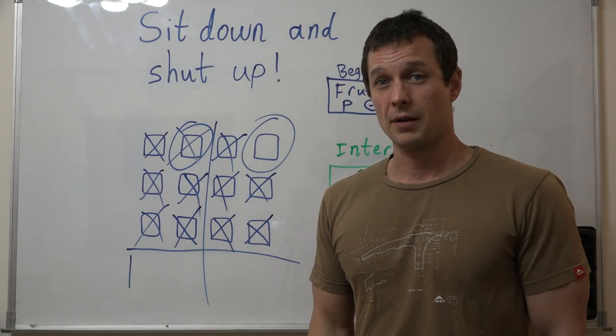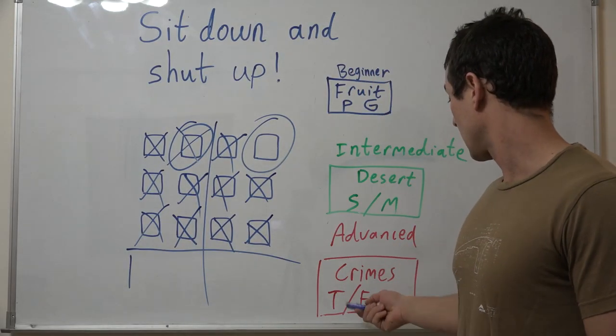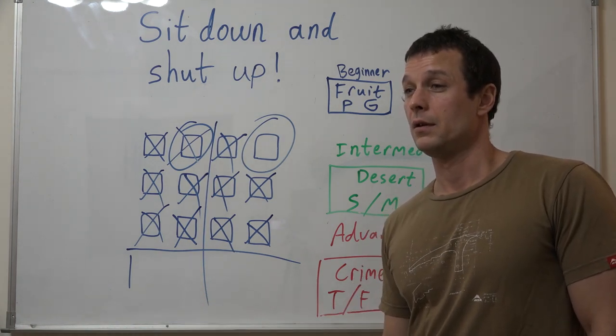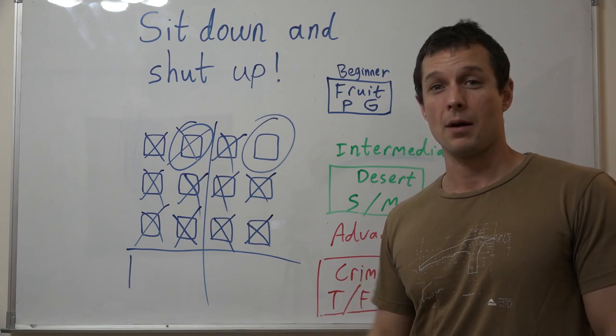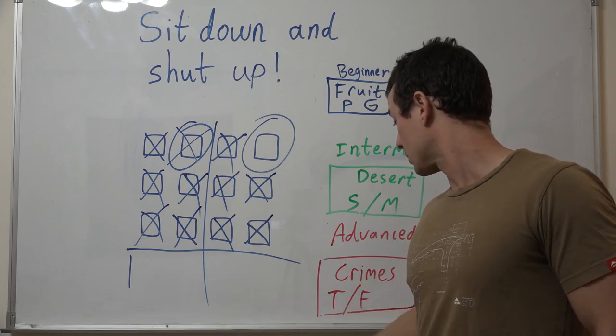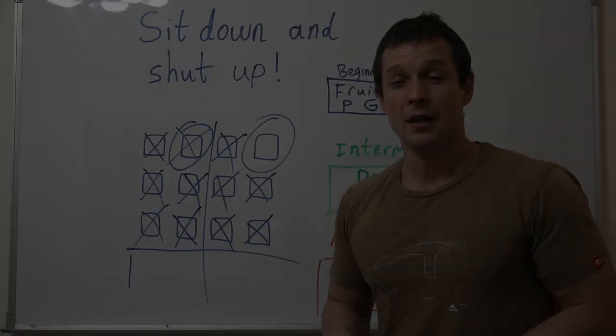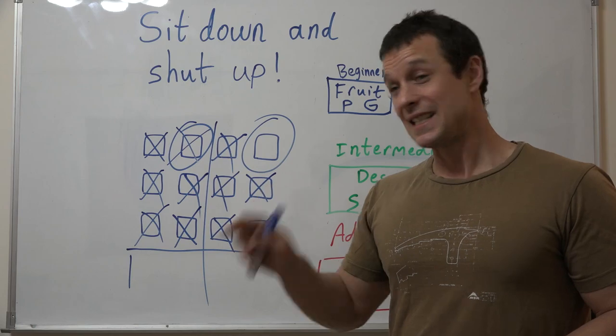So for adults or advanced classes you can still do the same thing. Advanced class - I got a crime, give me an example of a crime. Robbery, sure, robbery is a crime. Now I want a crime that starts with a T. Theft, good job, sit down and shut up.